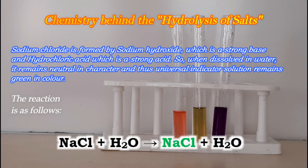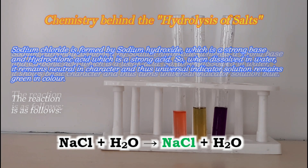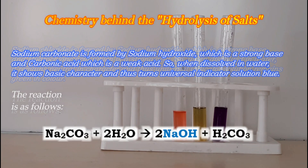Sodium chloride is formed by sodium hydroxide, which is a strong base, and hydrochloric acid, which is a strong acid. So when dissolved in water, it remains neutral in character and thus the universal indicator solution remains green. The reaction is: NaCl + H2O → NaCl + H2O.